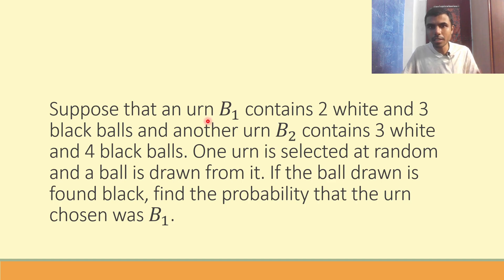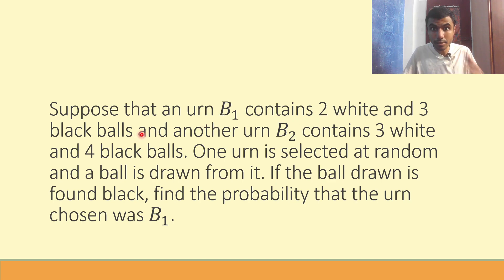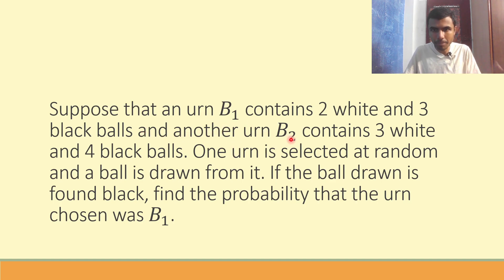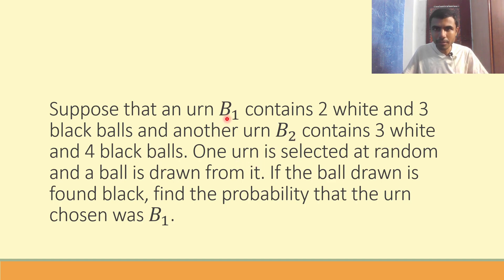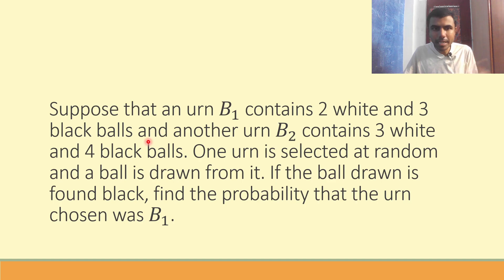Suppose that urn B1 contains 2 white and 3 black balls. And another urn — urn means a bag — B2 contains 3 white and 4 black balls. So the first bag has 2 white and 3 black, and the second bag has 3 white and 4 black balls.